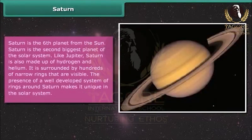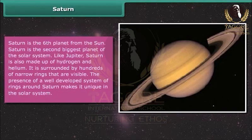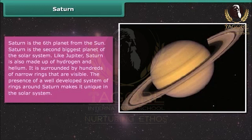Saturn is the sixth planet from the Sun and the second biggest planet of the solar system. Like Jupiter, Saturn is also made up of hydrogen and helium. It is surrounded by hundreds of narrow rings that are visible. The presence of a well-developed system of rings around Saturn makes it unique in the solar system.